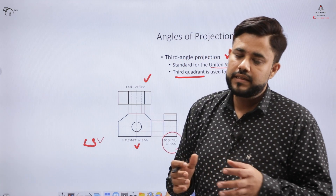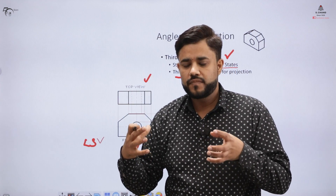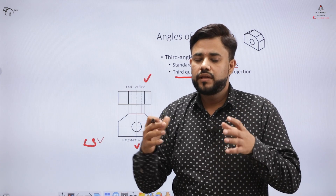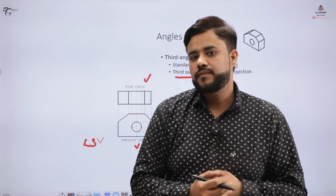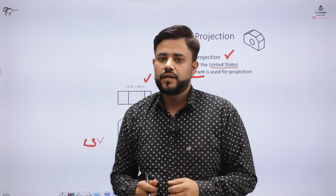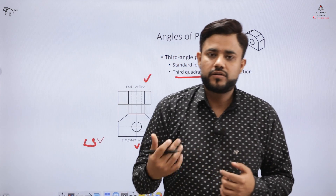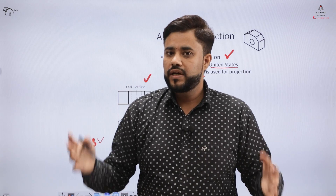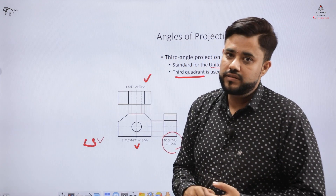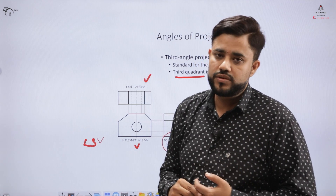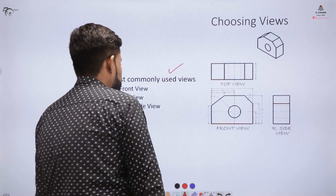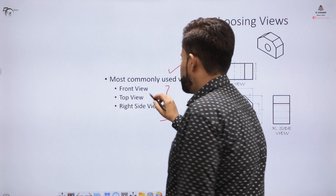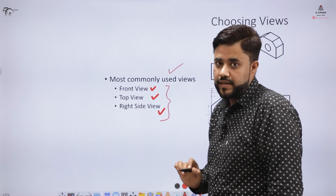When we keep the isometric view or a 3D object inside a box, it has six different planes on which images can be projected. When we open it completely, we get six different views: front, top, right side view, left side view, bottom view, and back view. Most commonly in industrial practice, we use three views: front view, top view, and right side view.